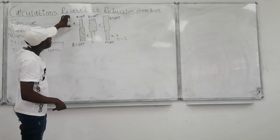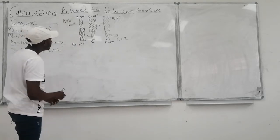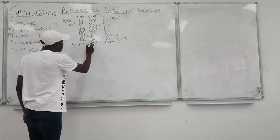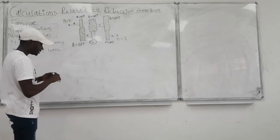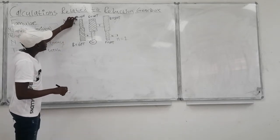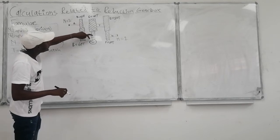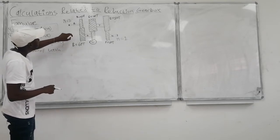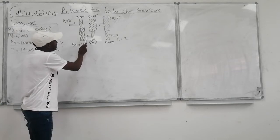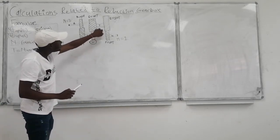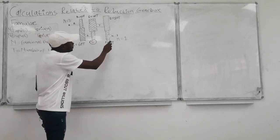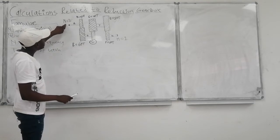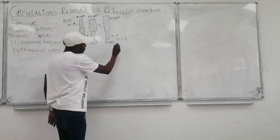Let's take the given gearbox and calculate the value of C, the number of teeth of gear C. In this gearbox we have gear A, B, C, D, E and F. We have our input shaft R, middle shafts S and T, and our output shaft U. Our input rotational frequency is A and our output rotational frequency is Y.